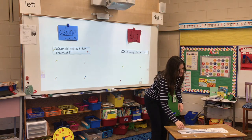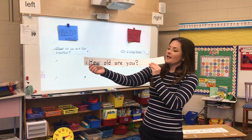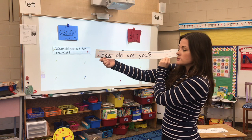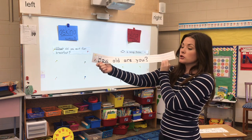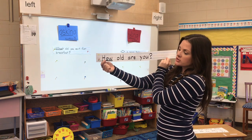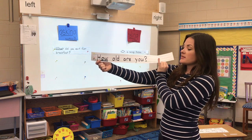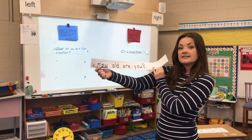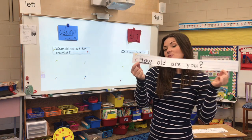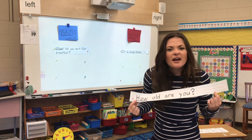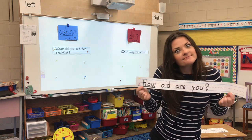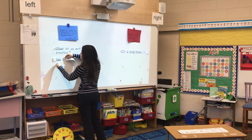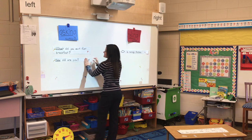All right, next sentence. It says, 'How old are you?' And I have two clues: I'm starting with the question word 'how,' and I'm ending with a question mark. 'How old are you?' is an asking sentence — it's asking us a question. How old are you? Probably six or seven. All right, it's going to go under our asking side — it is an asking sentence.